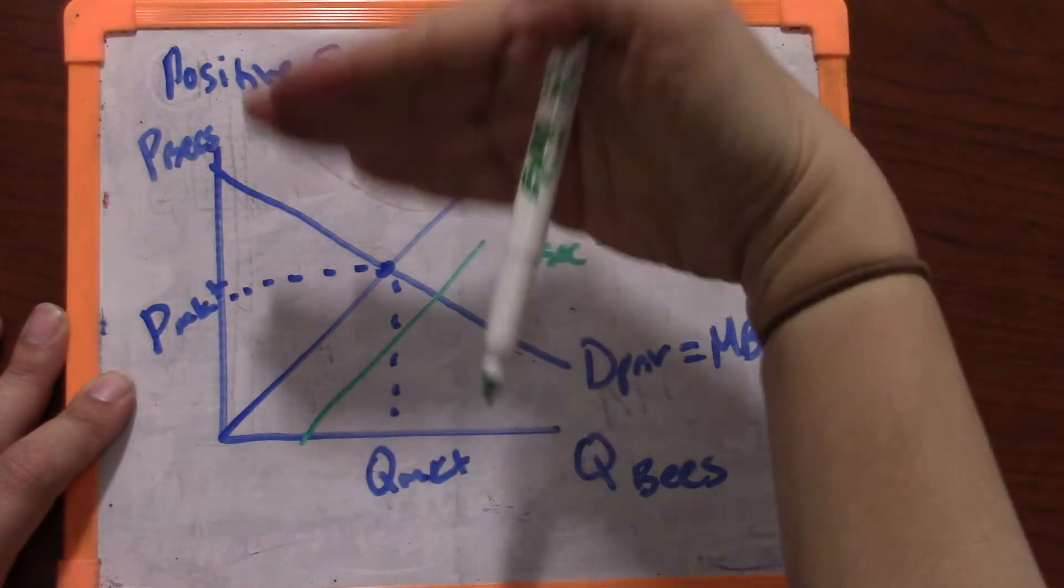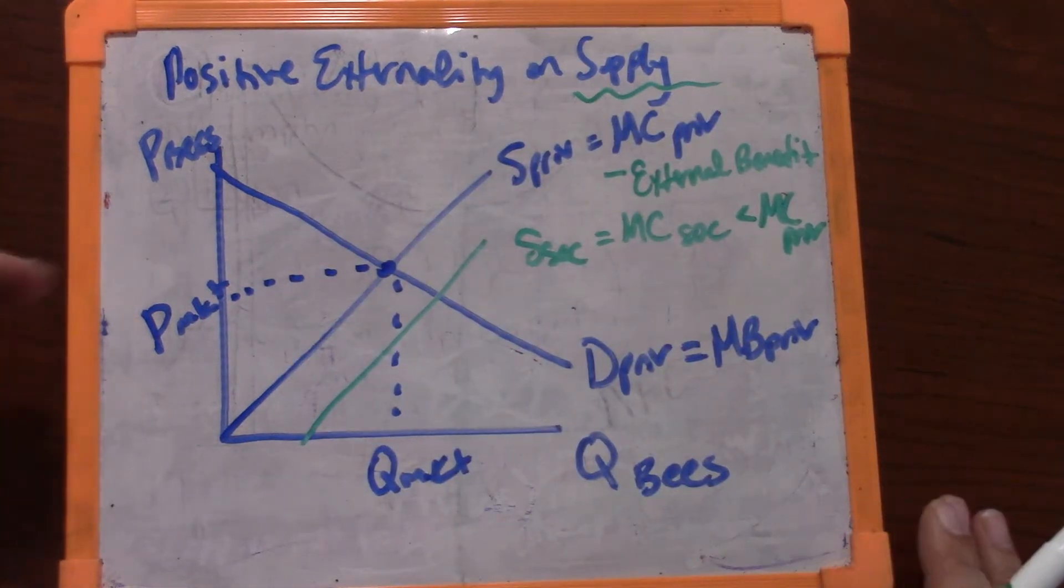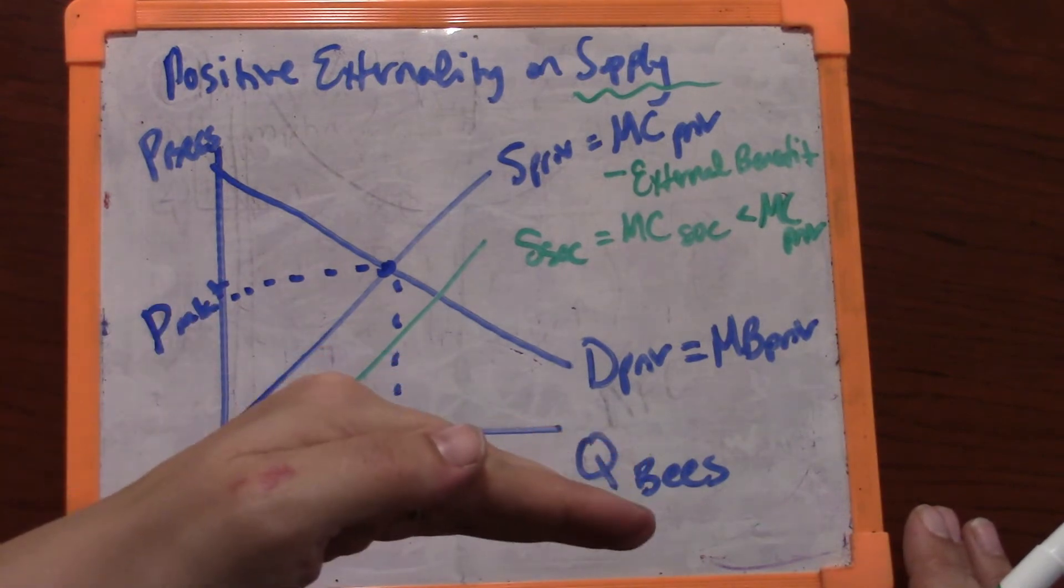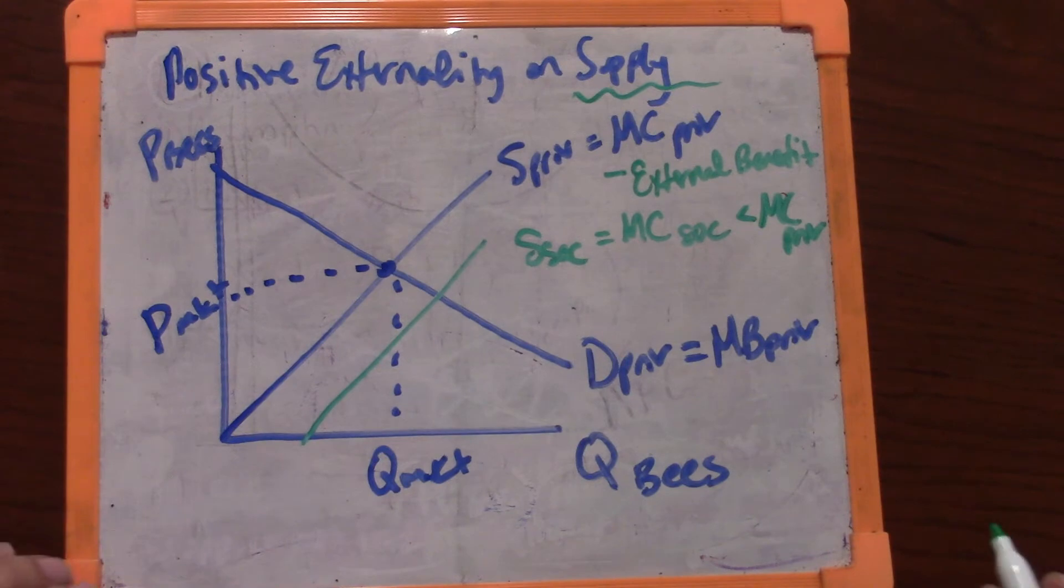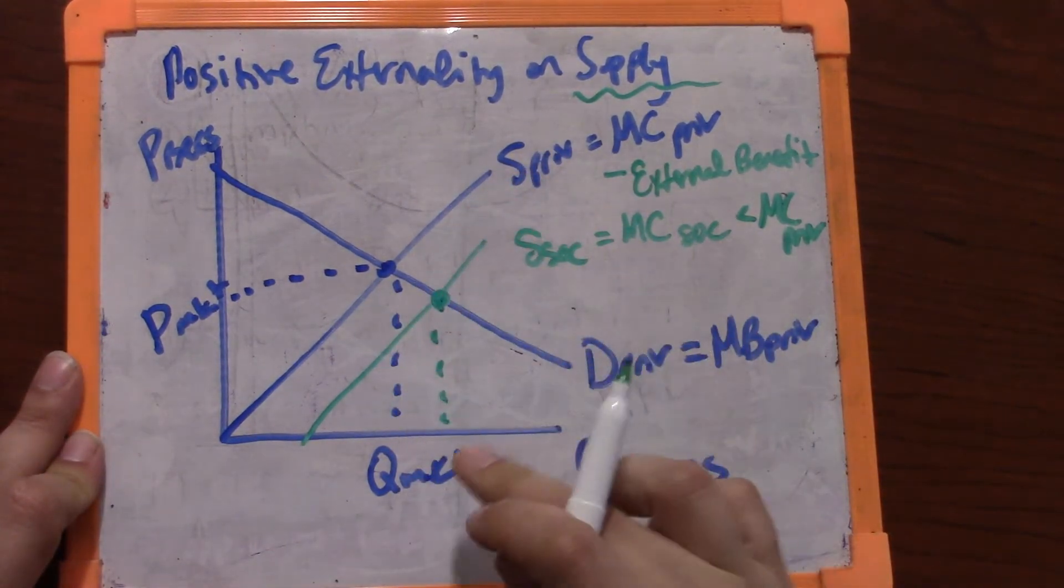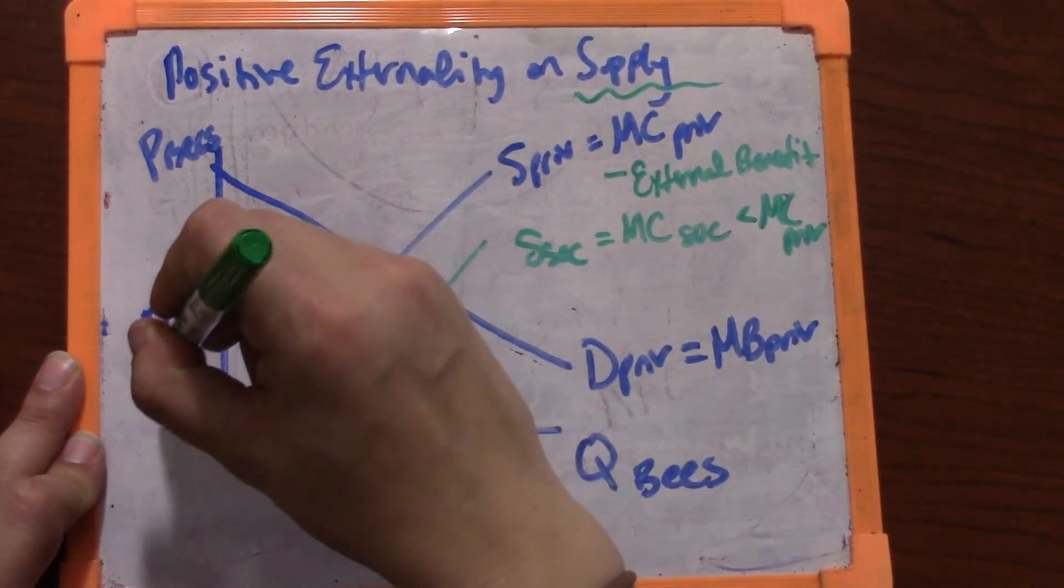So at every quantity the dollar amount will be vertically lower. Another way of thinking about that is that every price of bees, society would prefer a higher quantity to reflect positive supply externality. That means that what society wants is more bees at lower prices.